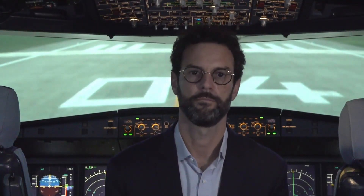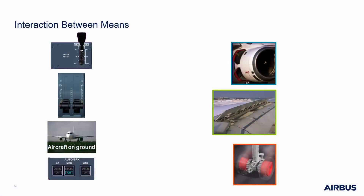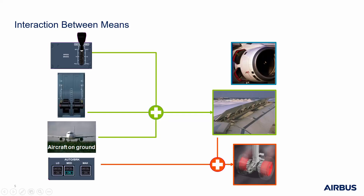Let's have a look at the logic and interaction between these three means. First, the spoilers need to be armed to be able to automatically fully extend when the thrust levers are set to idle or in reverse thrust range and both main landing gears touch down. Then, when the spoilers extend, the autobrake, if used, automatically activates at the selected level mode.